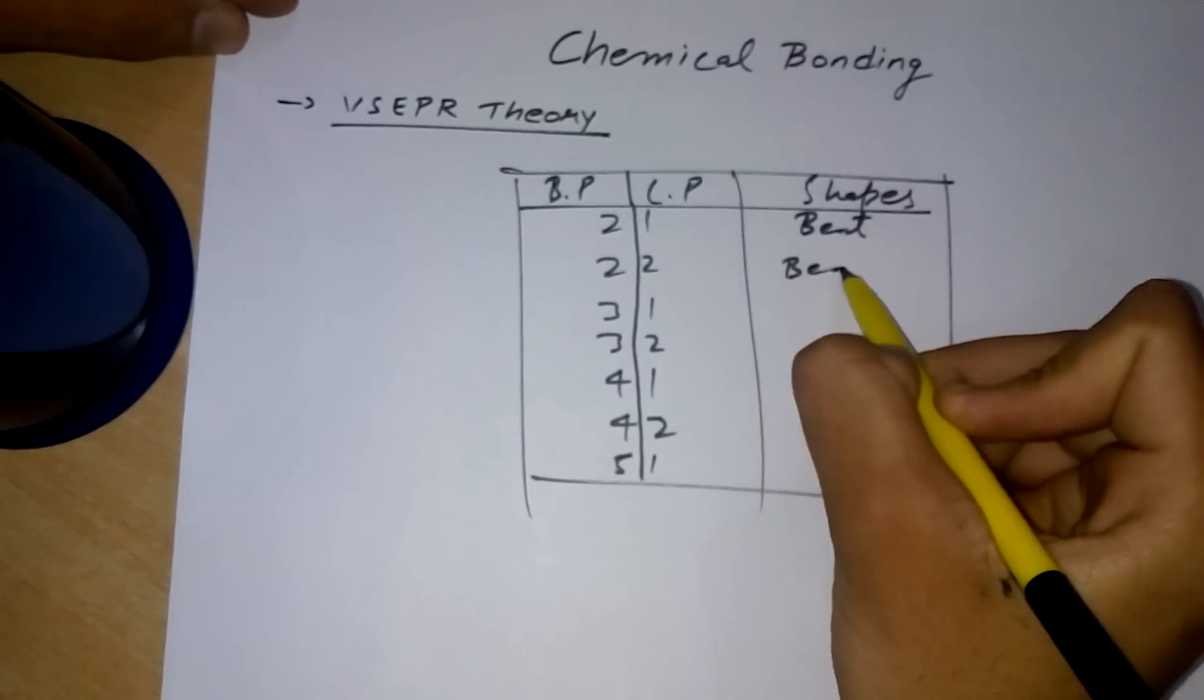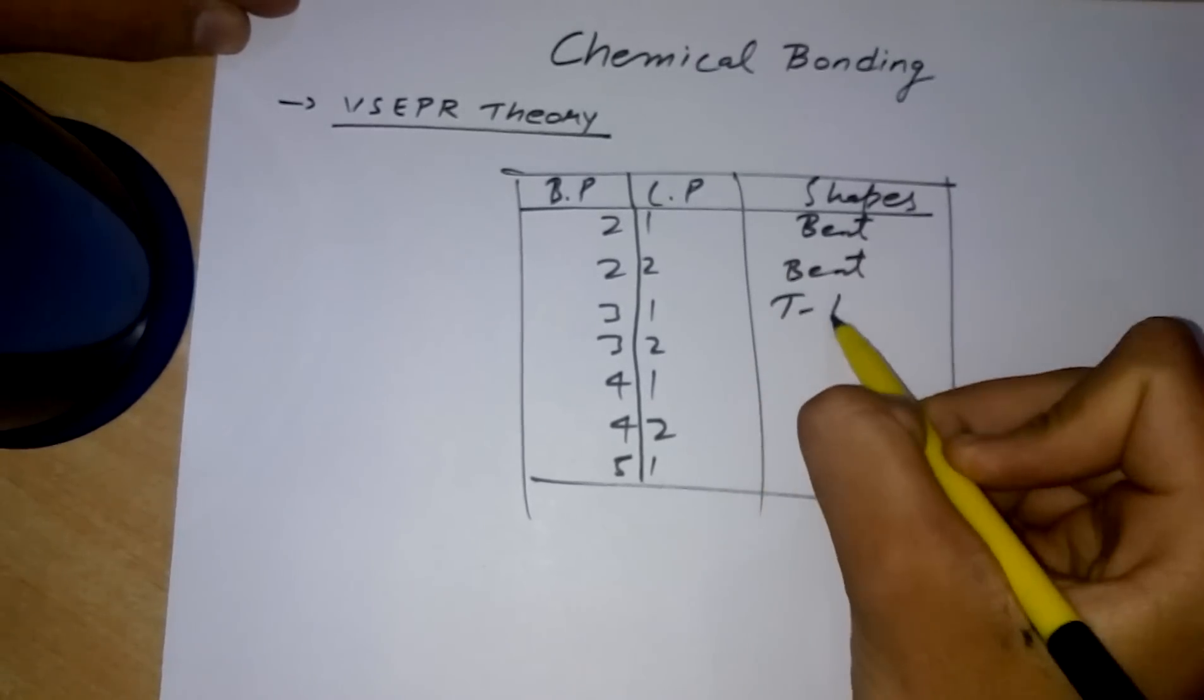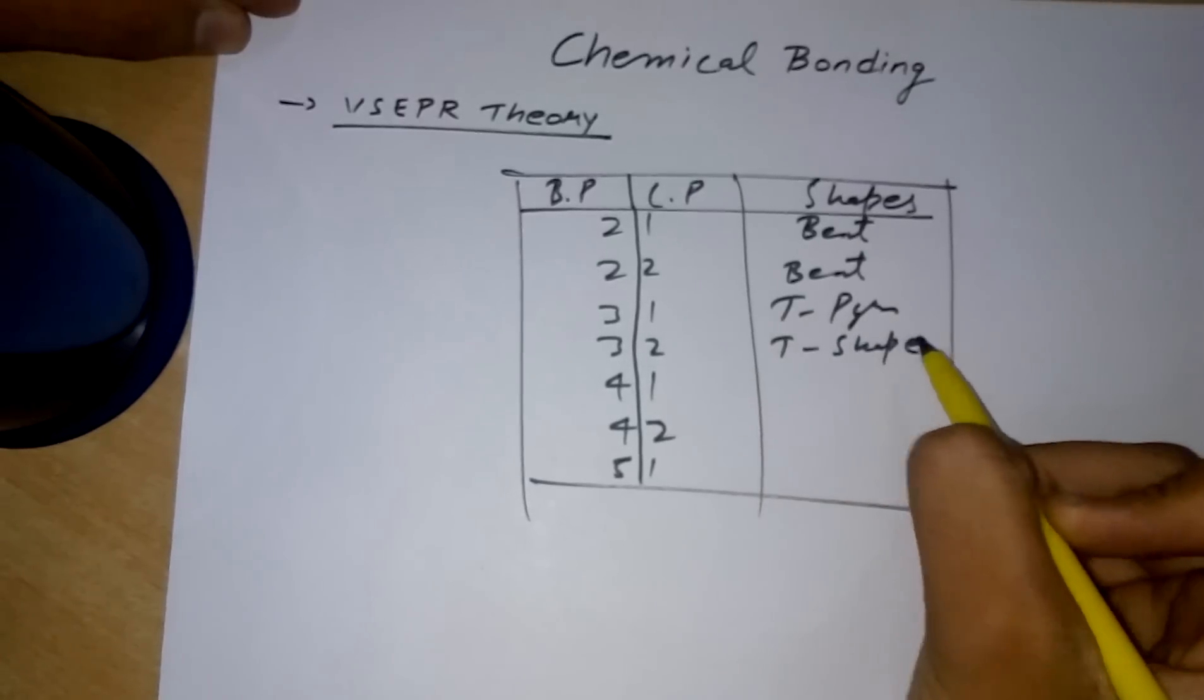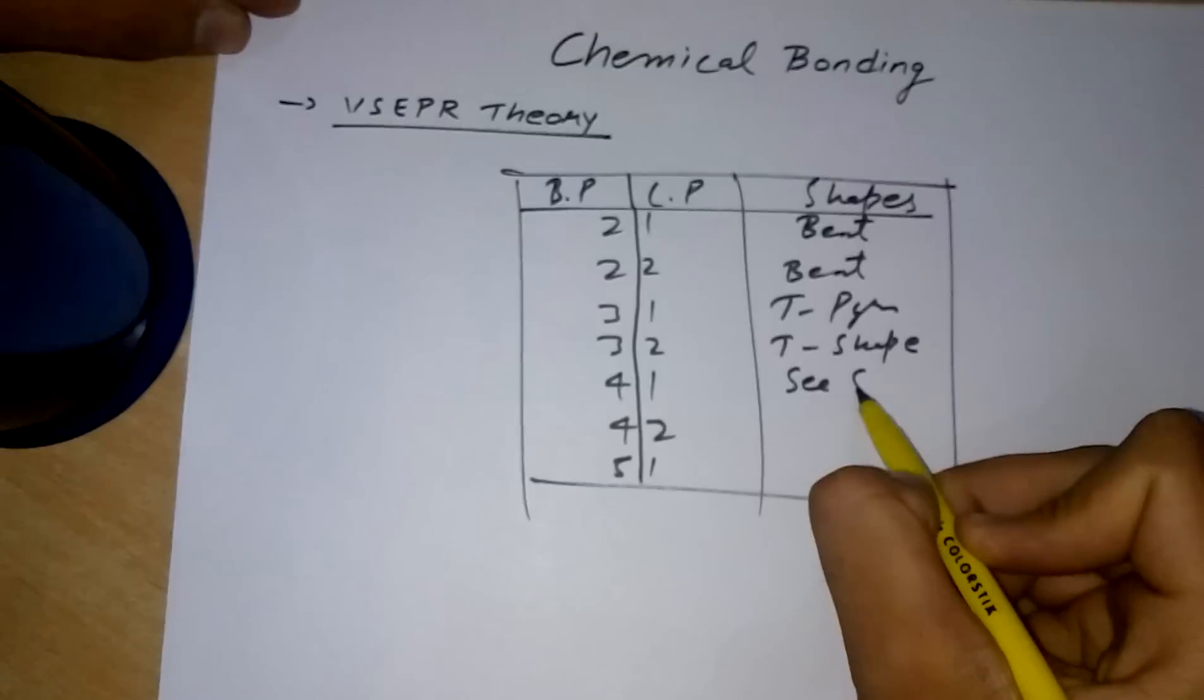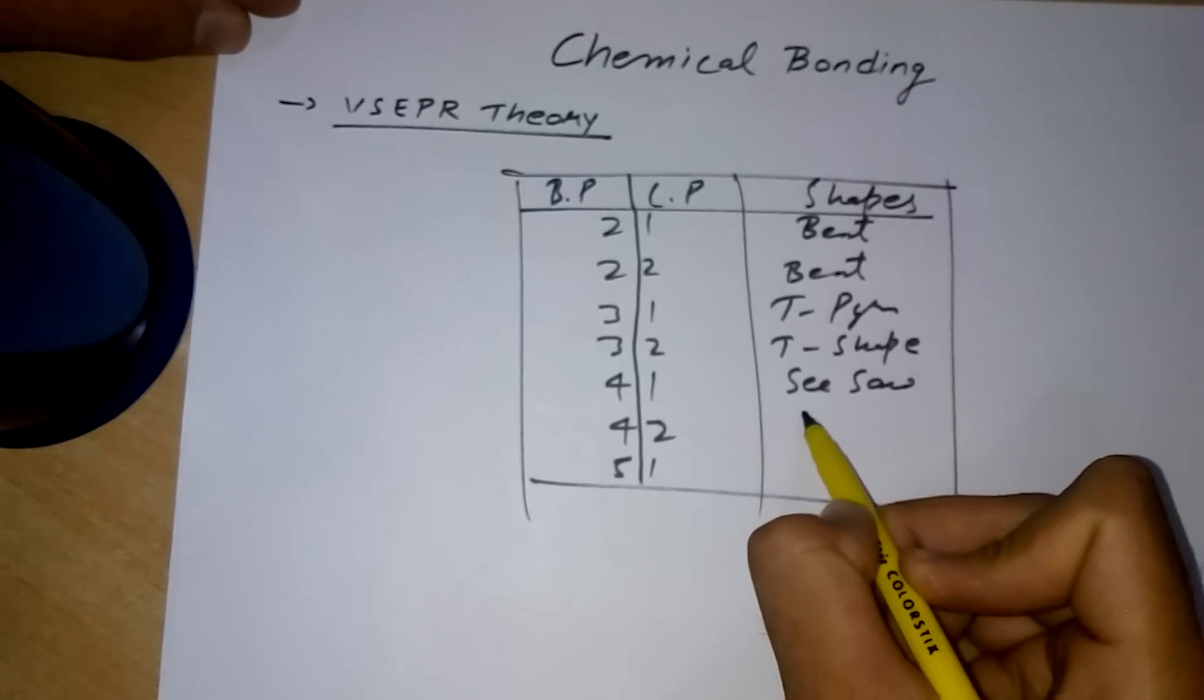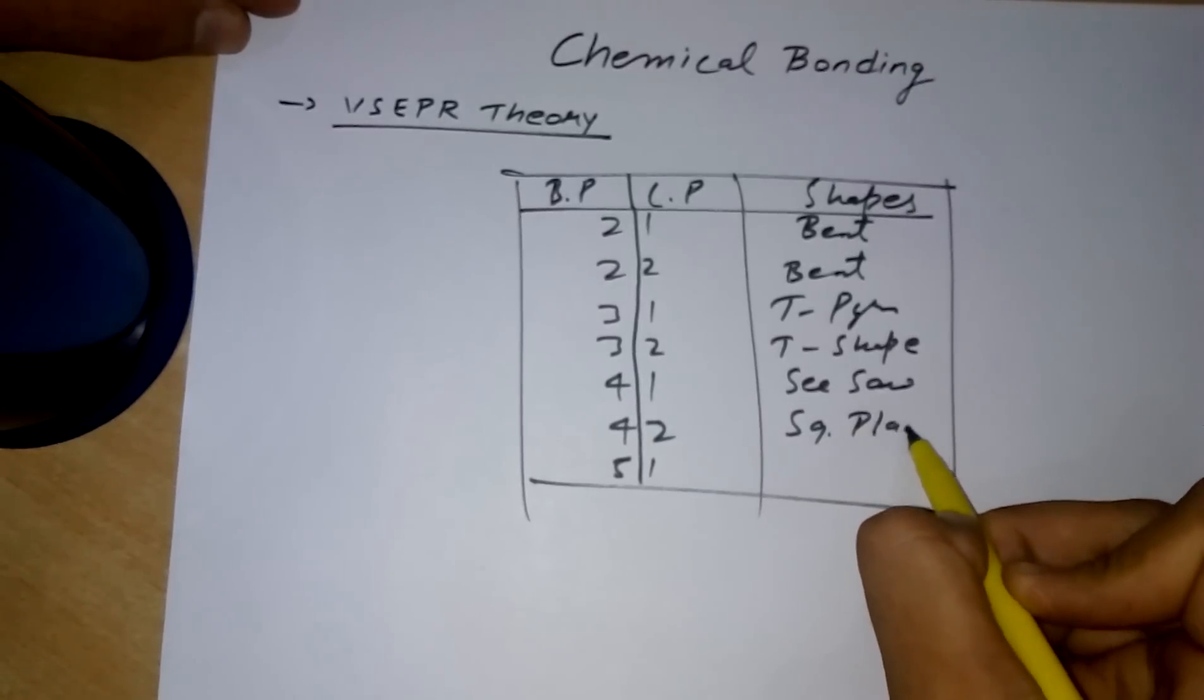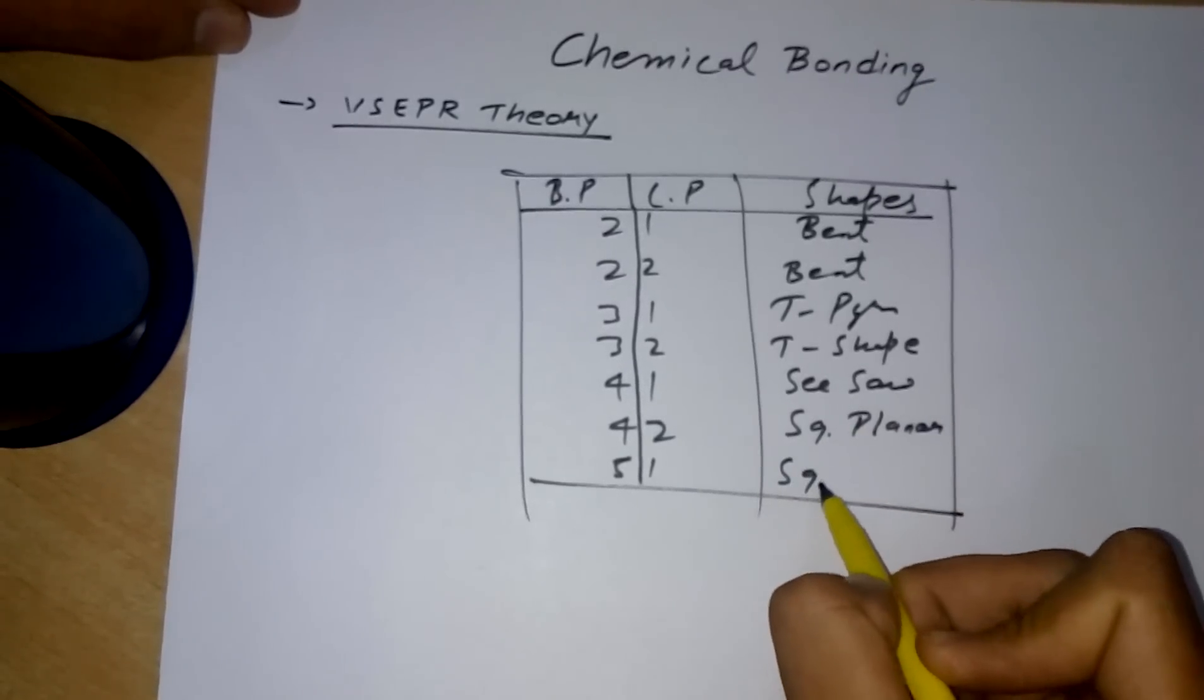Bent, bent, trigonal pyramidal, T-shape, seesaw, square planar, and square pyramidal.